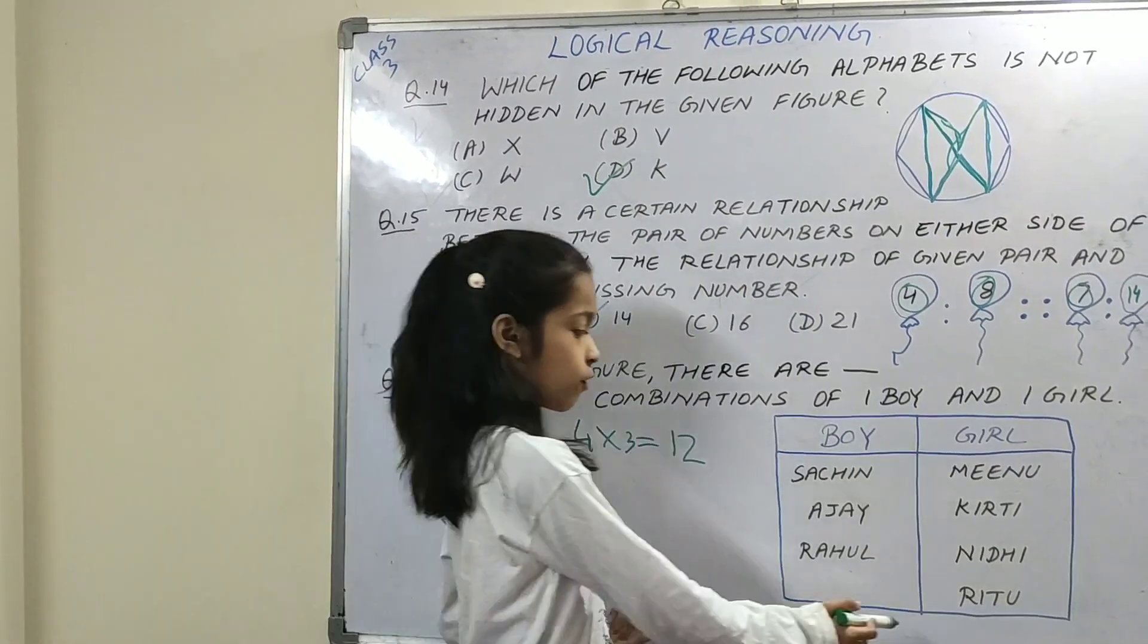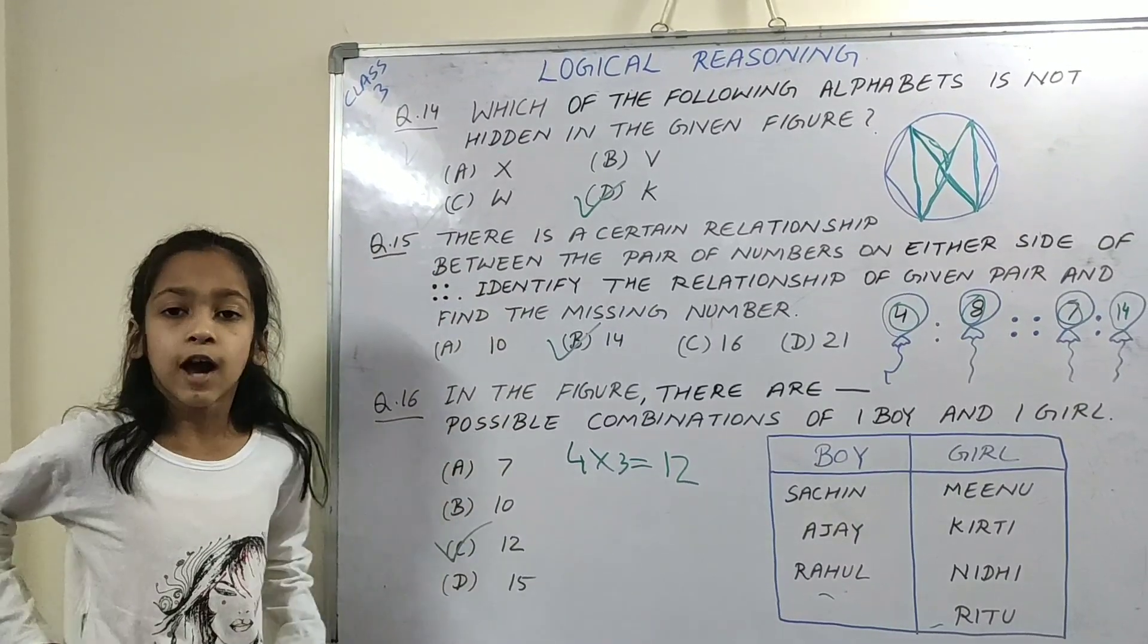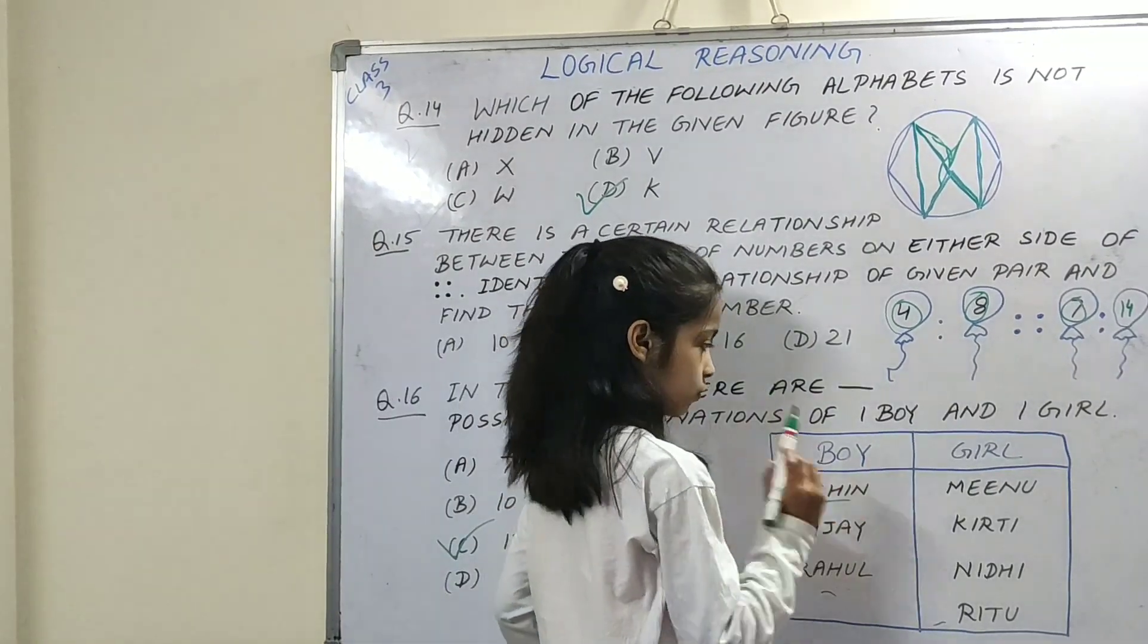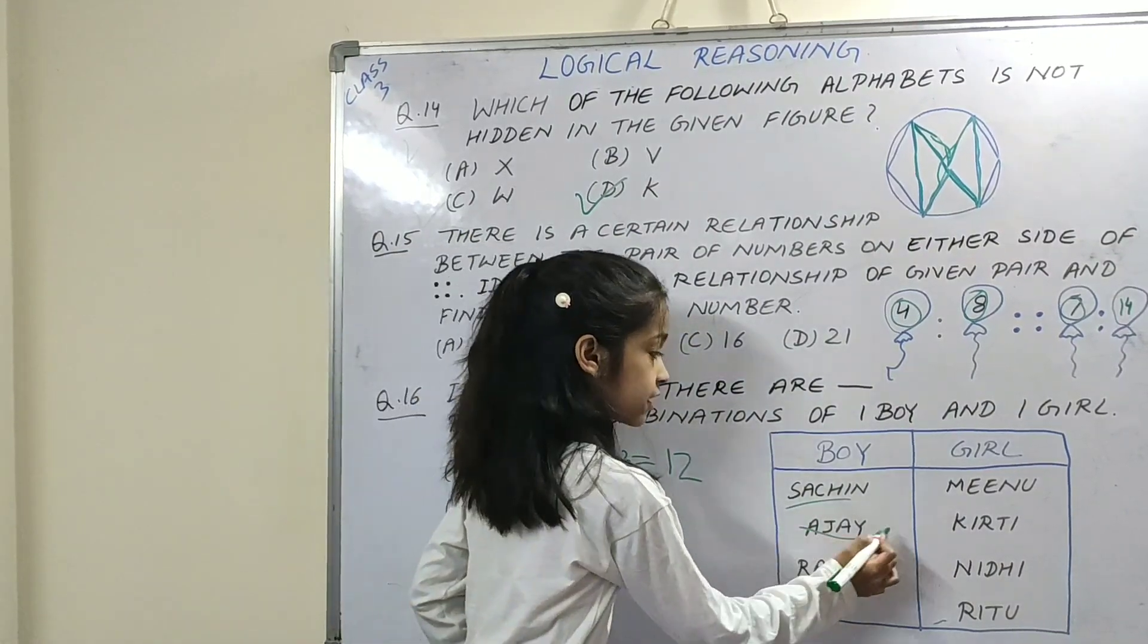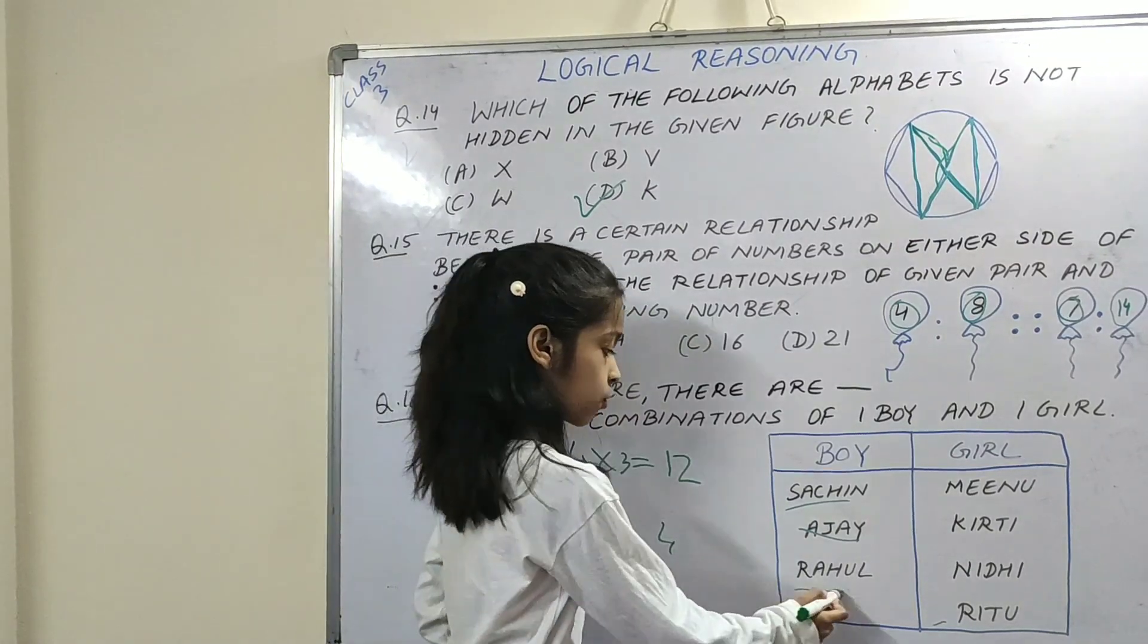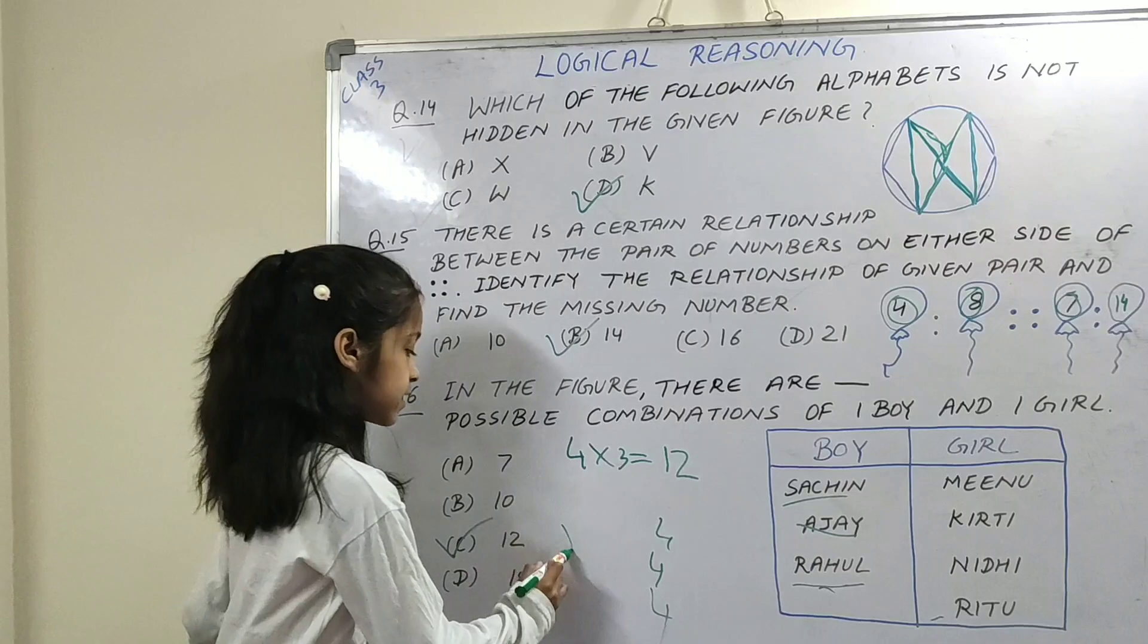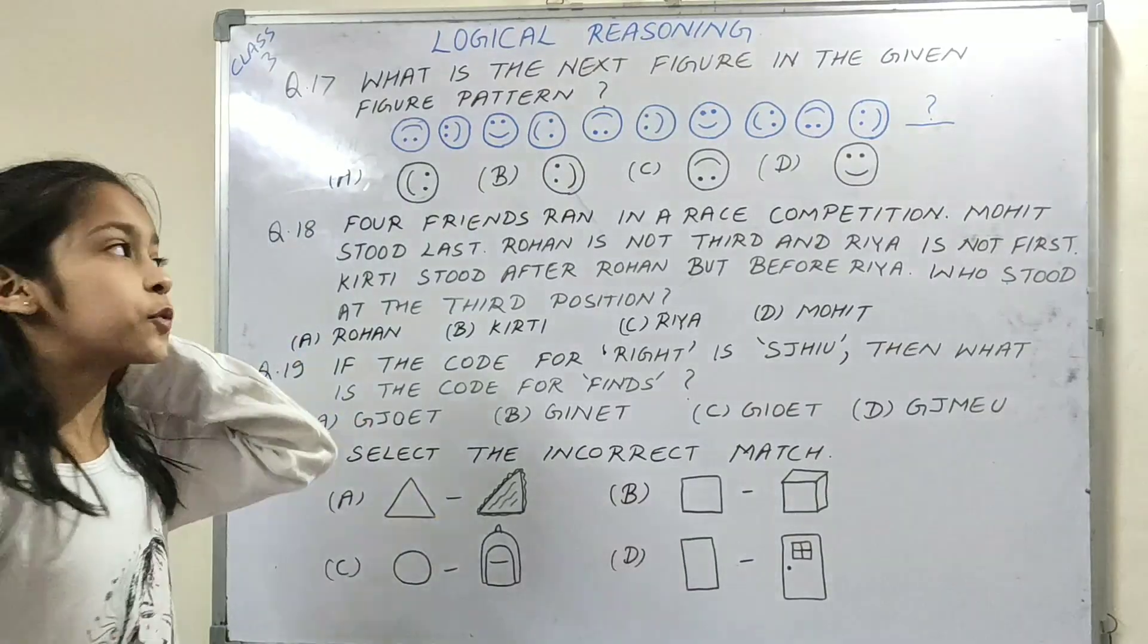Here we have 4 girls and 3 boys. We have multiplied this because we had a combination of one girl and one boy. The second way is that we have 4 girls. When we have 4 combinations with Ajay, then we have 4 girls and Rahul with 4 combinations, and we have 4 plus 4 plus 4. The answer is 12. So both are right options.